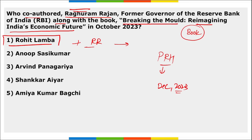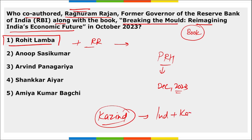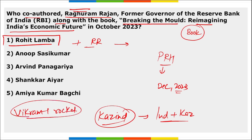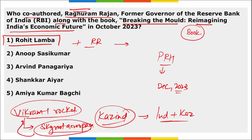Kazind is the name of the military exercise held between India and Kyrgyzstan. The Vikram 1 rocket belongs to the company Skyroot Aerospace.